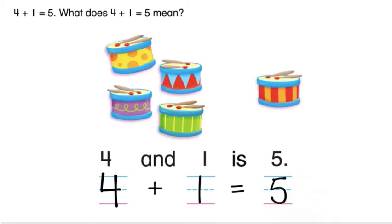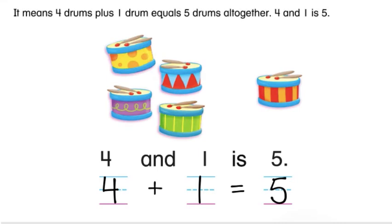What does four plus one equals five mean? It means four drums plus one drum equals five drums altogether. Four and one is five.